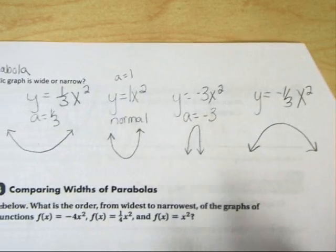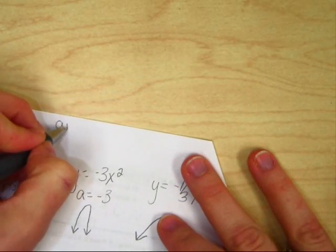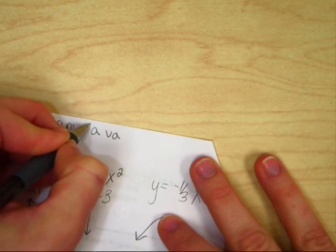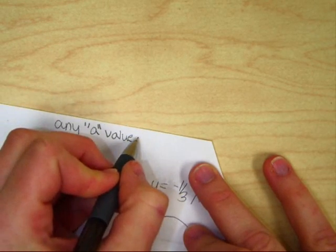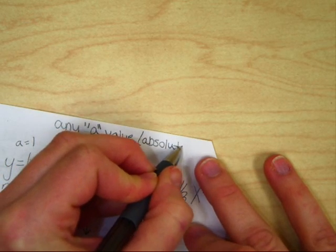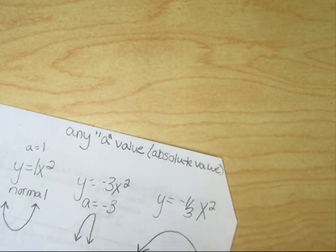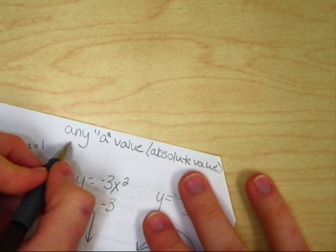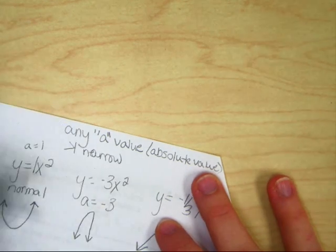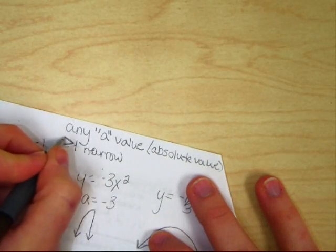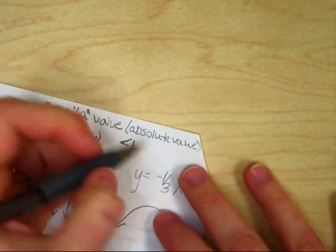So, when we talk about wide or narrow, let's write this up here. Any A value, and put A in quotes so you know I'm talking about A, any A value, and let's talk about the absolute value, meaning I don't care about I'm talking about the positive value, I don't care about its negativity, I care about the number itself. Any A value, the absolute value of it, greater than 1 is very narrow. Whereas, if it was less than 1, and again, I'm talking about absolute values, guys, it would be very wide.